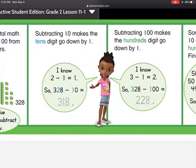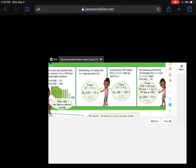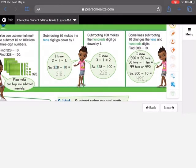Subtracting 100 makes the hundreds digit go down by 1. And we know that 3 minus 1 equals 2. So 328 minus 100 equals 228. You didn't do anything to the tens or ones because there was just a 0 in those numbers.